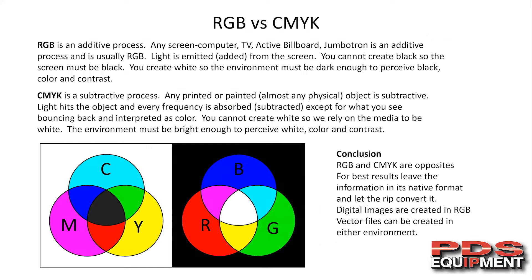Let's talk about RGB versus CMYK. RGB is an additive process. Any screen — like a computer, TV, active billboard, or jumbotron — is an additive process and it's usually RGB. Light is emitted or added from the screen. You cannot create black, so the screen must be black; you create white. The environment must be dark enough to perceive black color and contrast. When picking out a TV, turn it off and kill the power — whichever one has the darkest black screen is probably going to give you the best image.